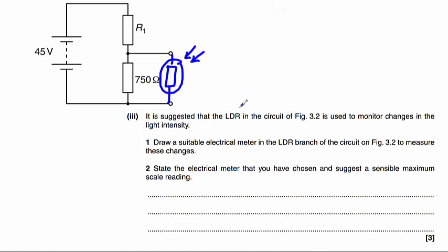The final part of this question explains that the LDR is to be used to monitor changes in light intensity. So we need to draw a suitable electrical meter in the LDR branch of the circuit to measure these changes. The best we can use would be a voltmeter. That would allow us to measure the potential difference as it changes across the LDR. And voltmeters must always be connected in parallel. If you wanted to use an ammeter, that's fine, but you'd have to draw that in series.